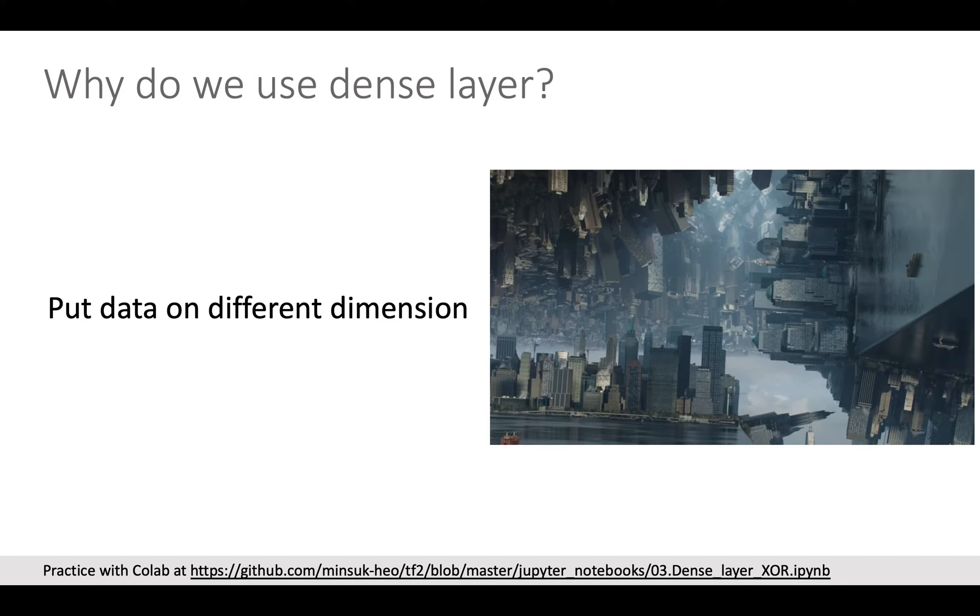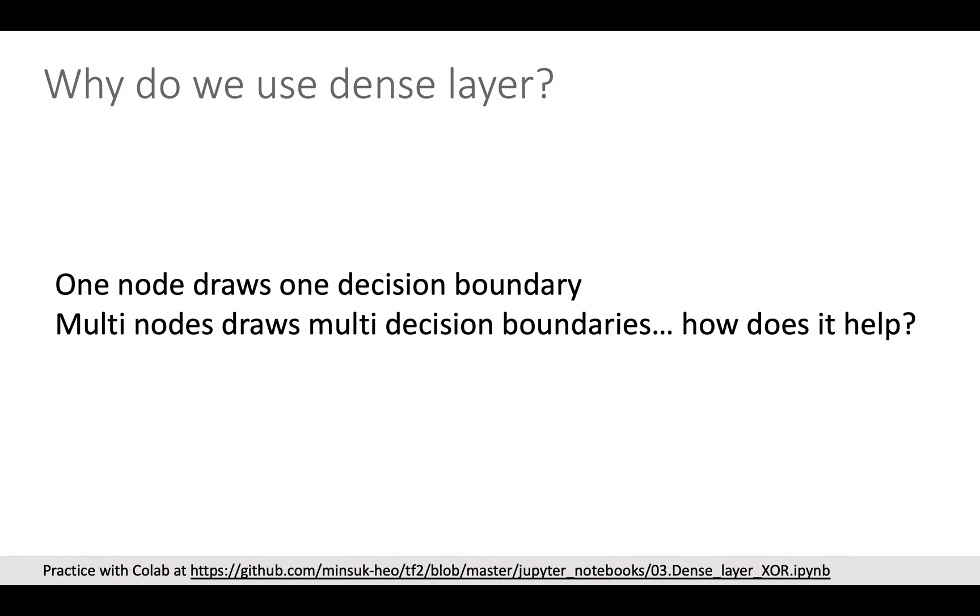There are many reasons why we use Dense Layer. Most importantly, we use Dense Layer to put the data in a different dimension. Let's understand it with an easy example. Before speaking about the Dense Layer, let's keep in mind that one node can draw one decision boundary. Therefore, two nodes can draw two decision boundaries.